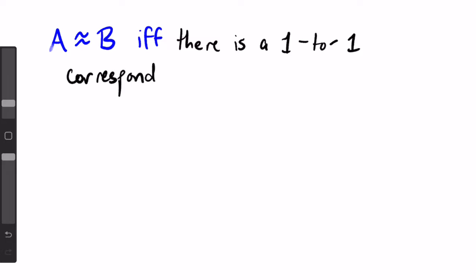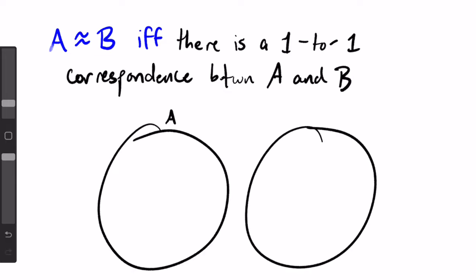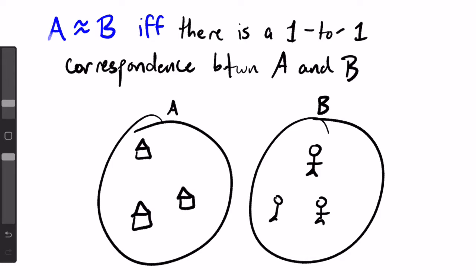Since we are not toddlers, and we have already learned lots of set theory, we will define equinumerosity as such. A set A is equinumerous to a set B if and only if there is a one-on-one correspondence between A and B. You can click on the card above to rewatch Lesson 5 about functions, but for a brief recap, this means there is some function pairing up elements in A and B such that every element in A has a distinct partner in B, and every element in B has a distinct partner in A, which, as per our anecdote, makes perfect sense.